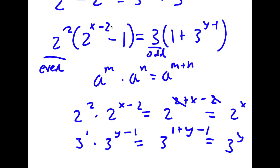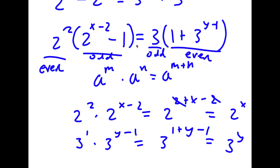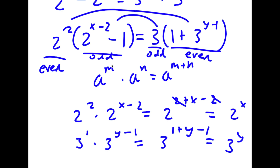2 to the power of x minus 2 is even, and an even number minus 1 is odd. And 3 to the power of any number is odd, and an odd number plus 1 is even. So I have an even number times an odd number equal to an odd number times an even number, meaning the two odd numbers are equal to each other and the two even numbers are equal to each other.